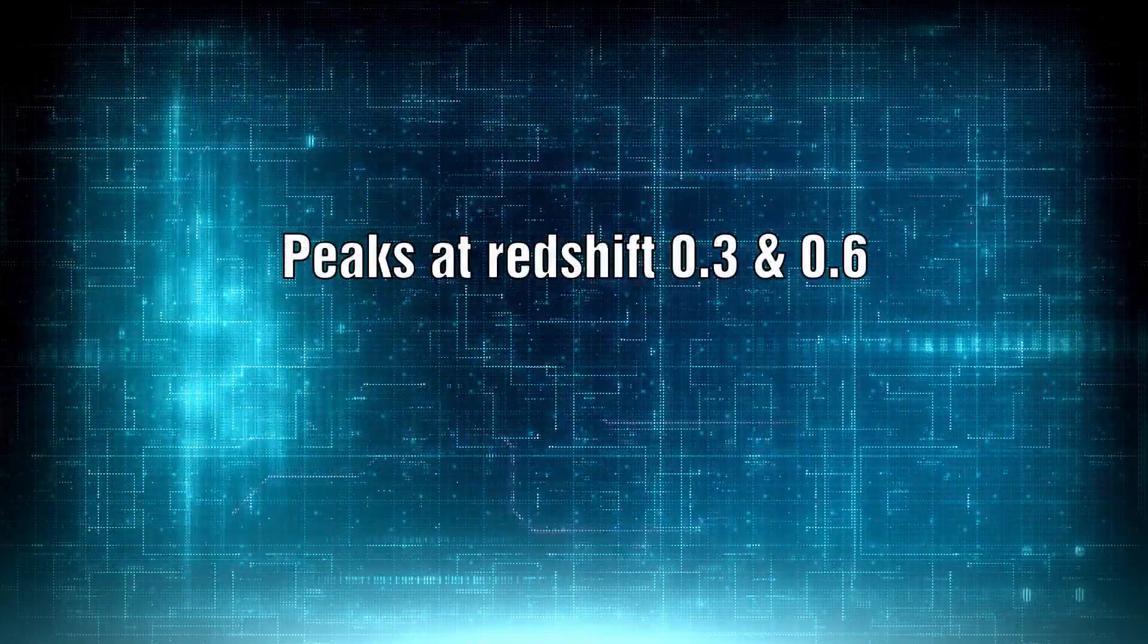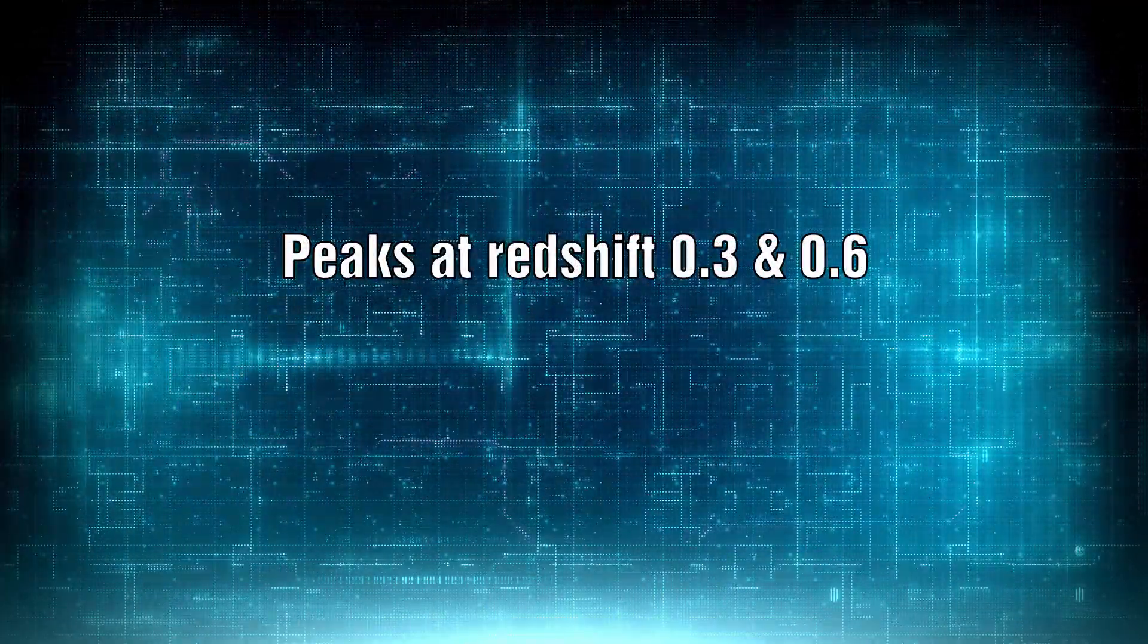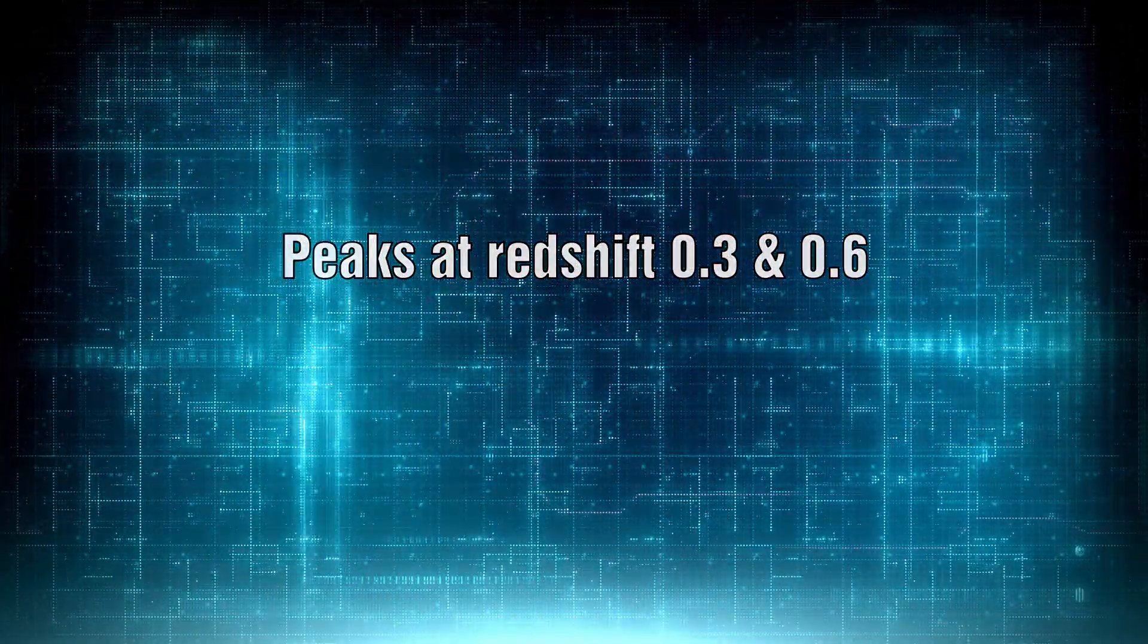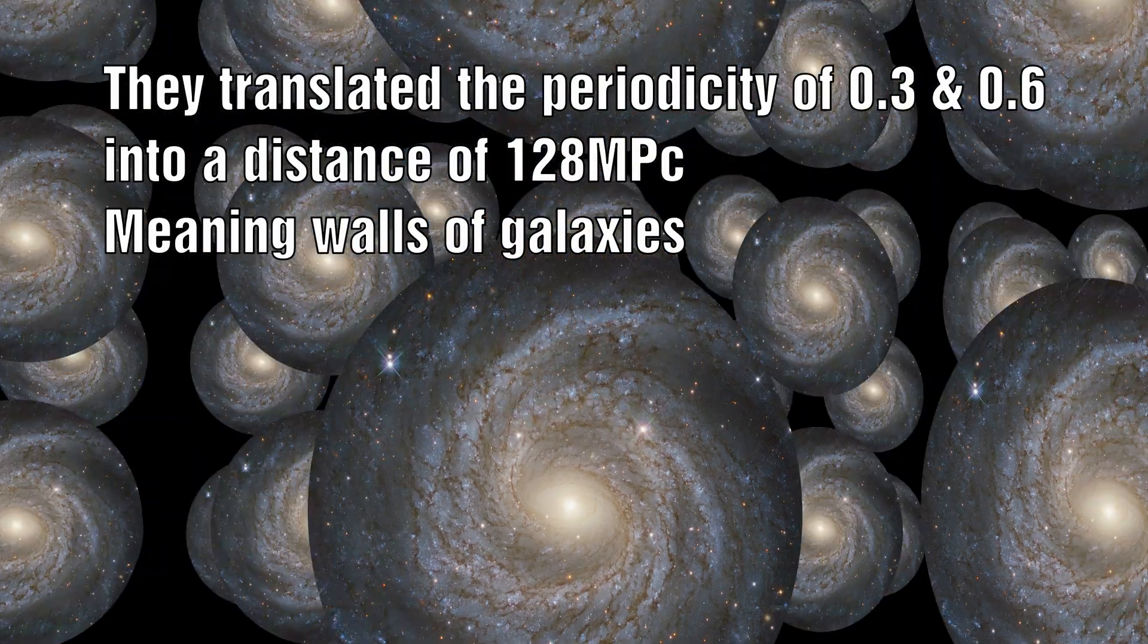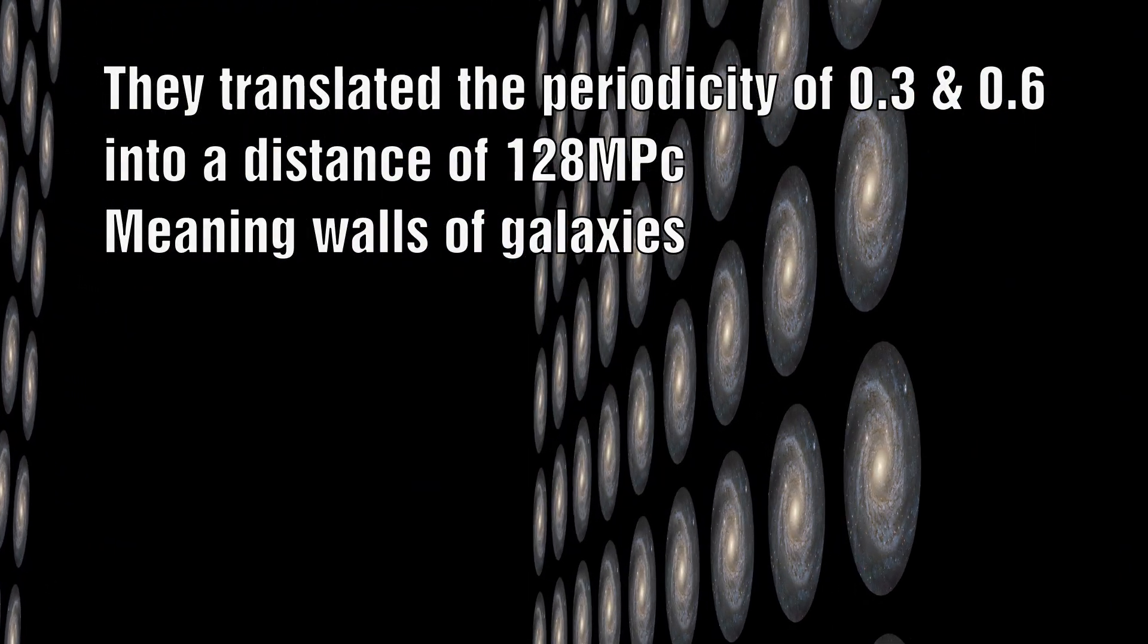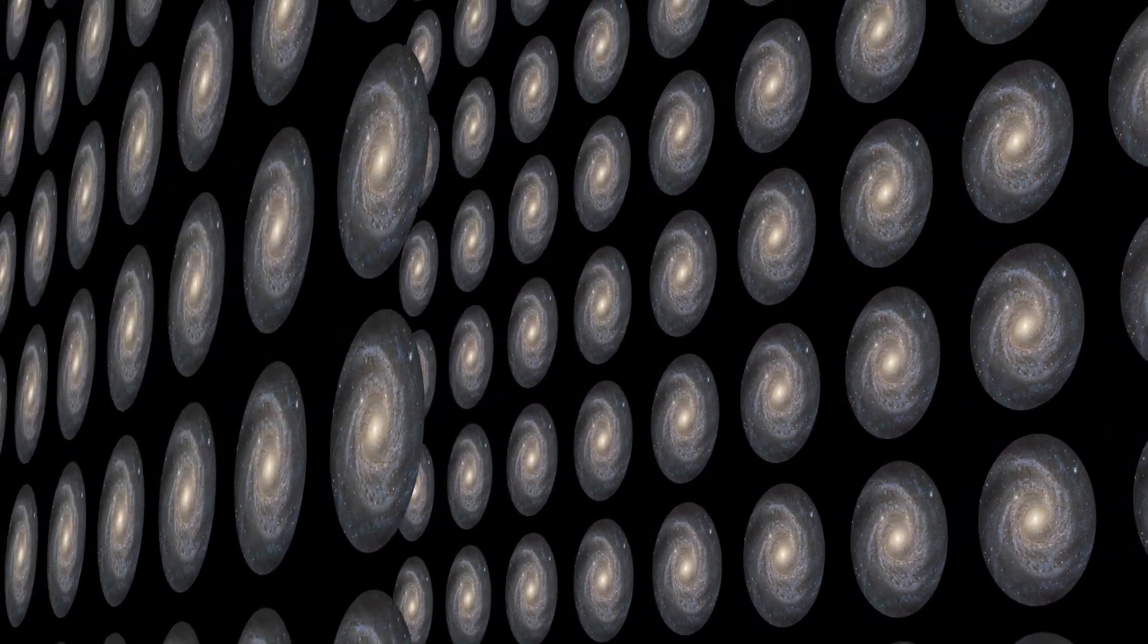It clearly showed peaks at 0.3 and 0.6 and this was perfectly in line with what Arp had discovered for the redshift of some quasars. They attempted to suggest that the galaxies were spaced in intervals of 128 megaparsecs.